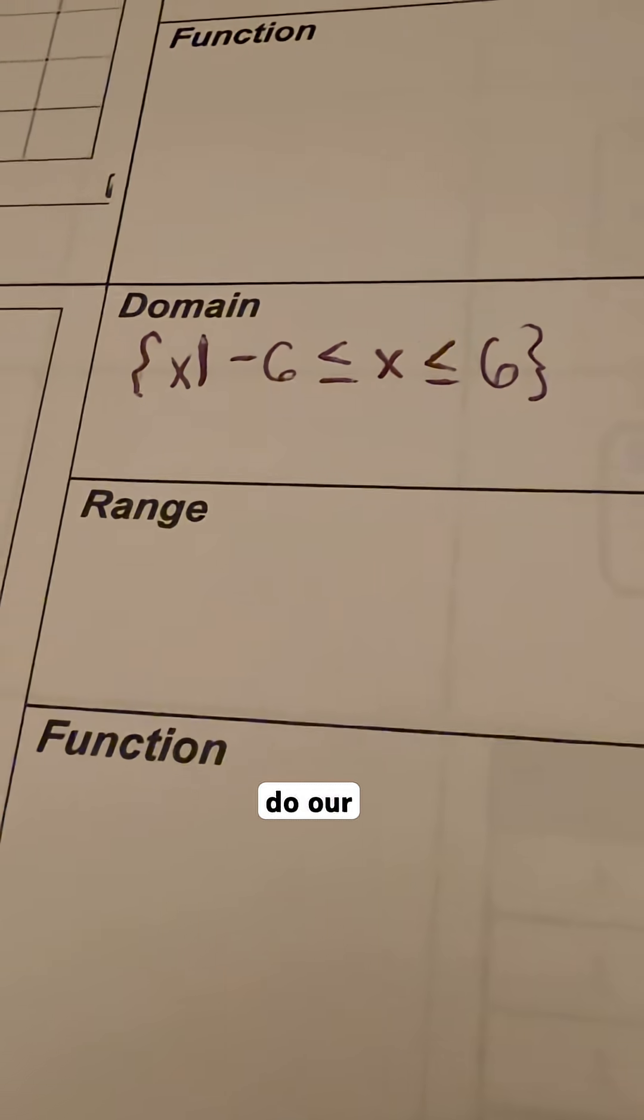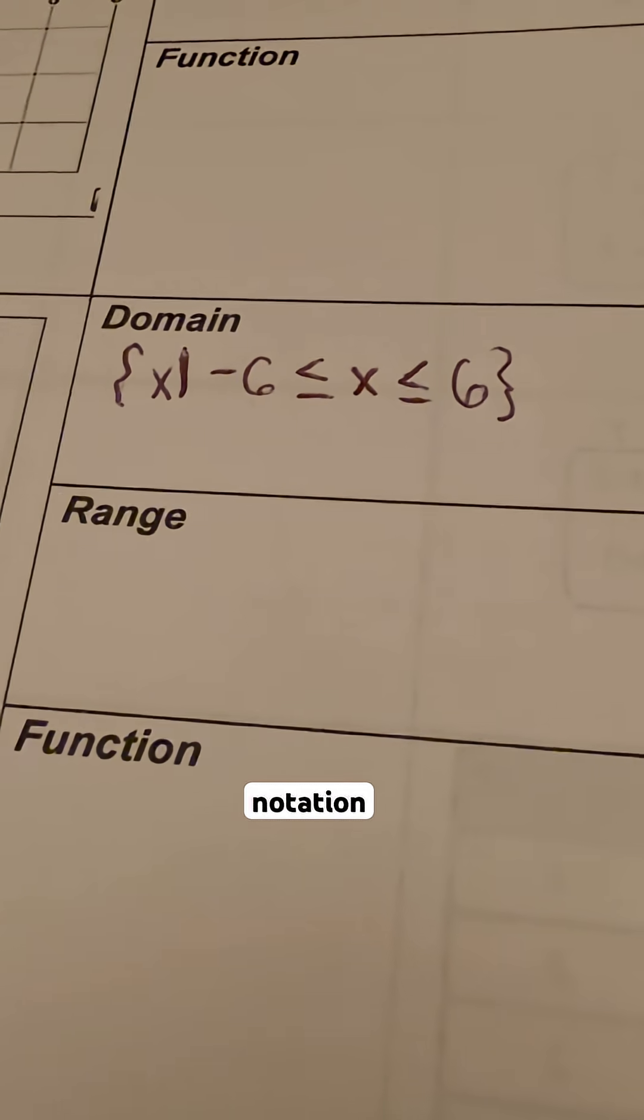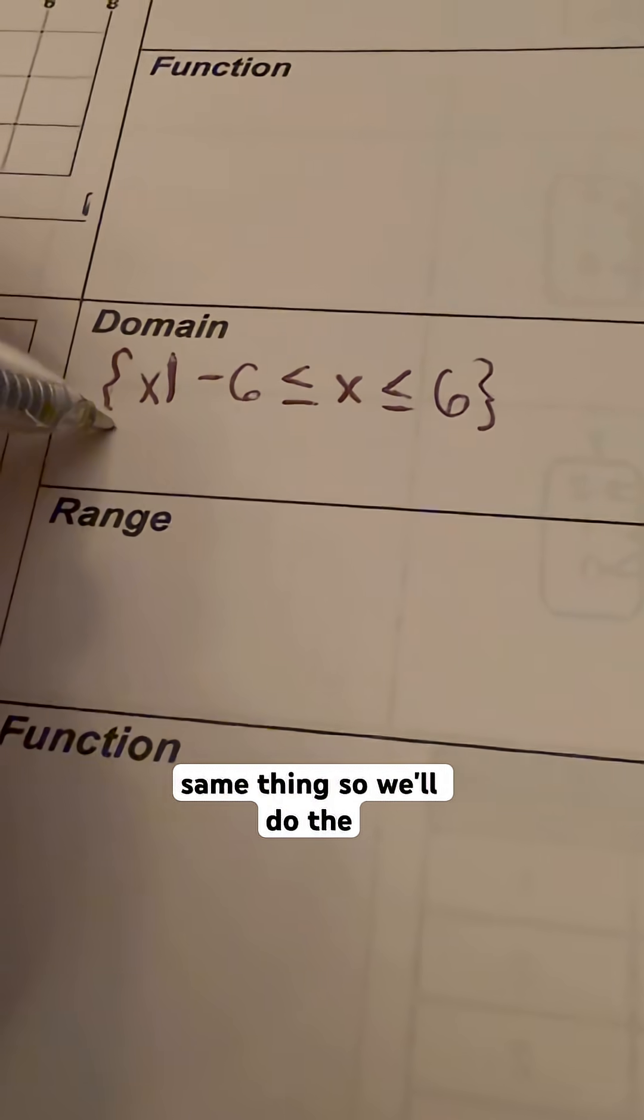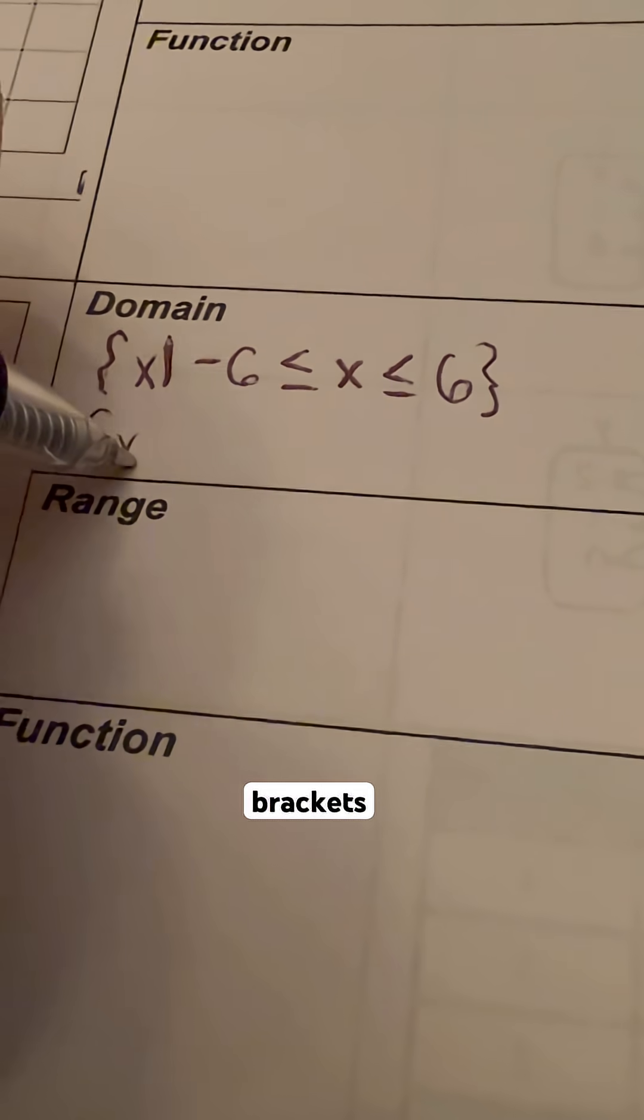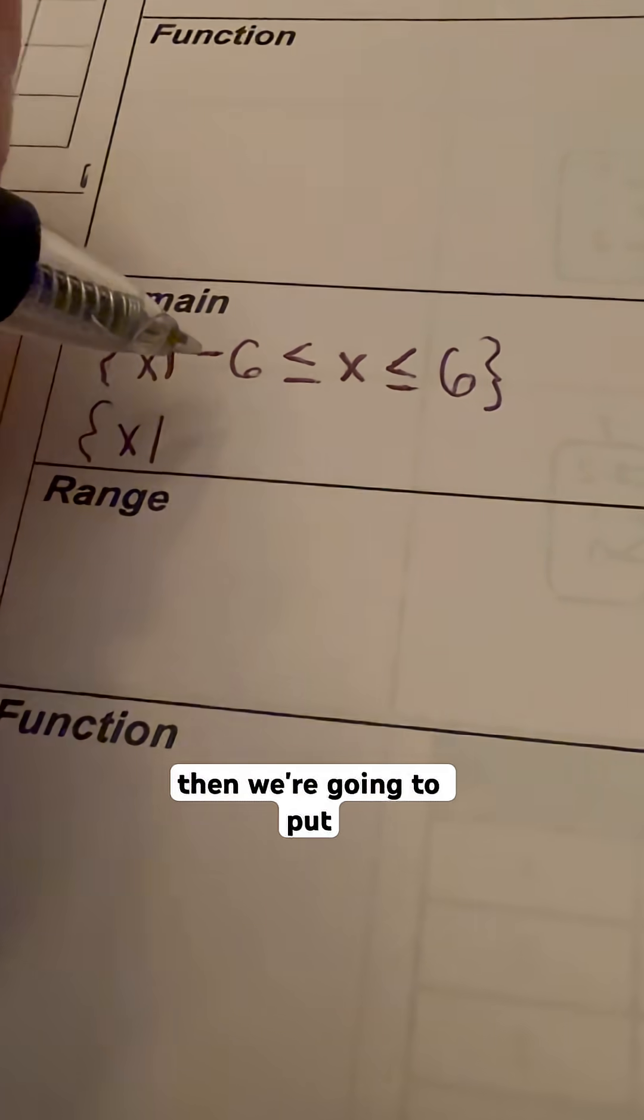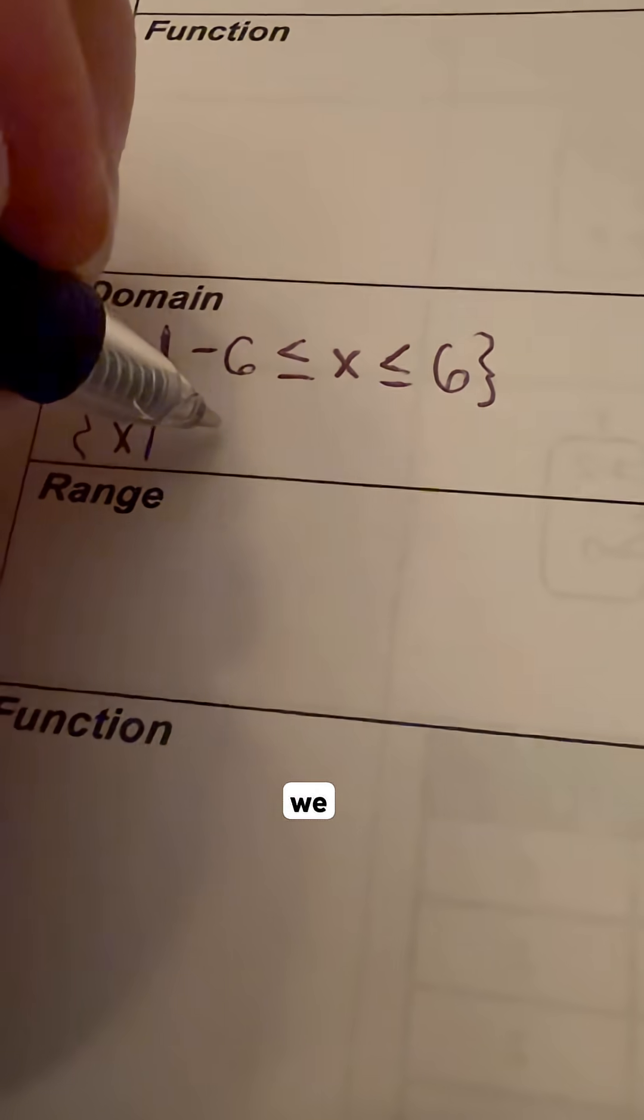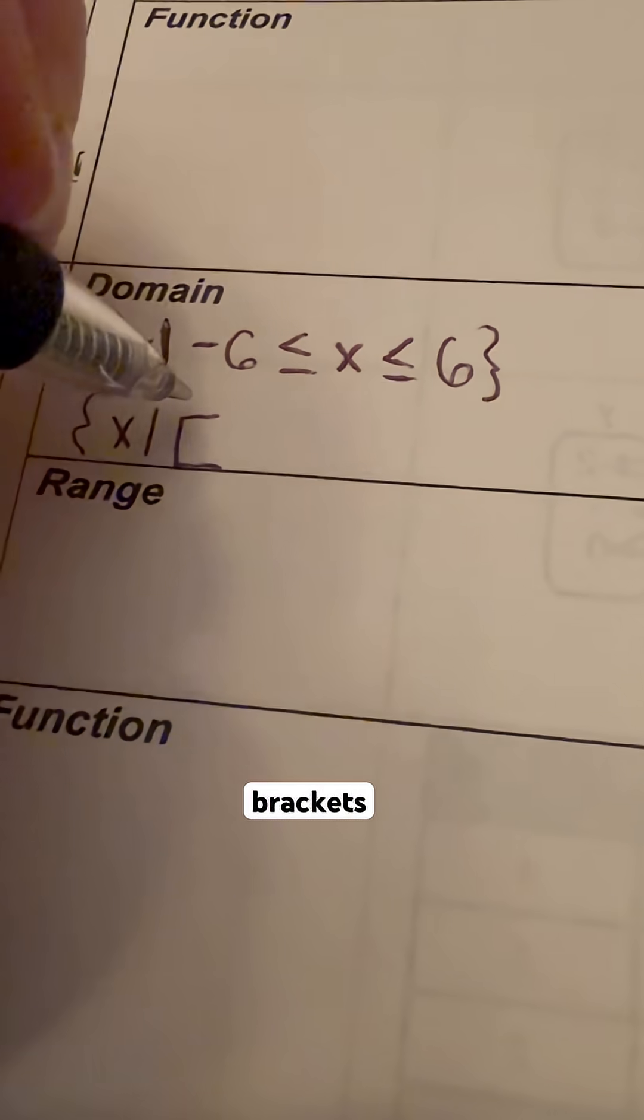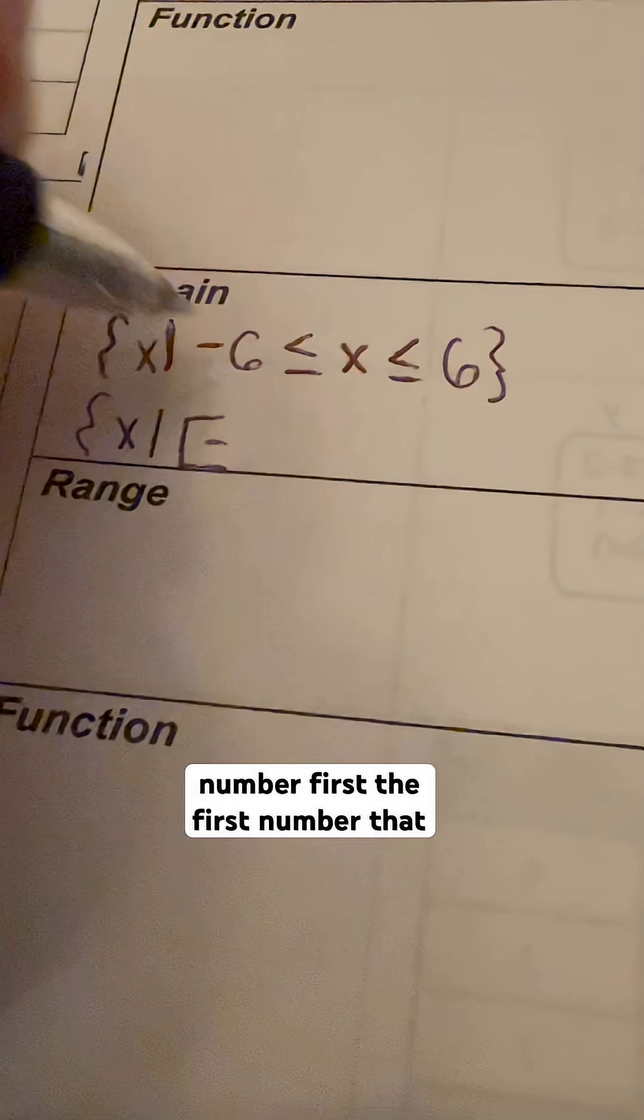And then we're going to do our interval notation. We are going to say the same thing, so we'll do the little curly brackets. We're going to put x, such that, and then because these are both inclusive, we use hard brackets on those numbers.